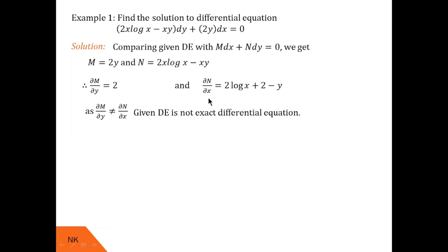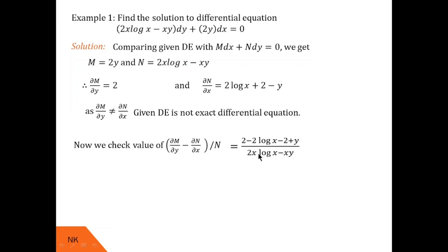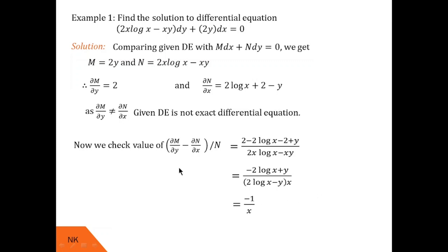Now we compute (∂M/∂y minus ∂N/∂x) divided by N. Substituting values: numerator is 2 minus (2 log x + 2 minus y) = minus 2 log x + y; denominator is 2x log x minus xy. Taking x common from the denominator, (2 log x minus y) cancels with the numerator, leaving minus 1 over x. This is a function of x alone, so we call it f(x) = -1/x.